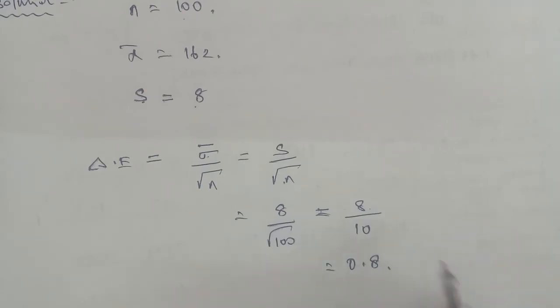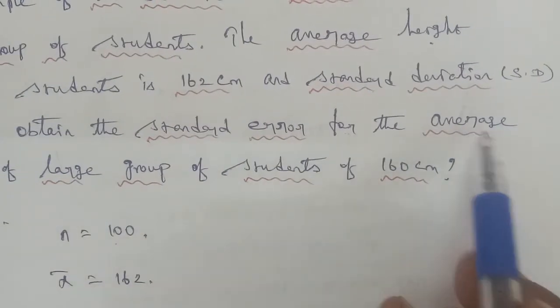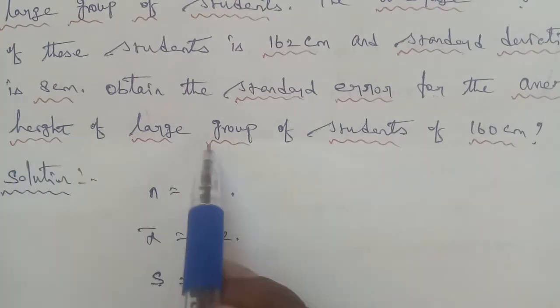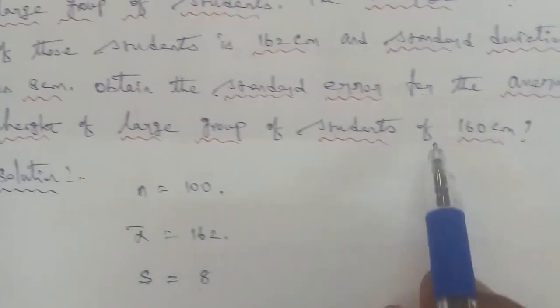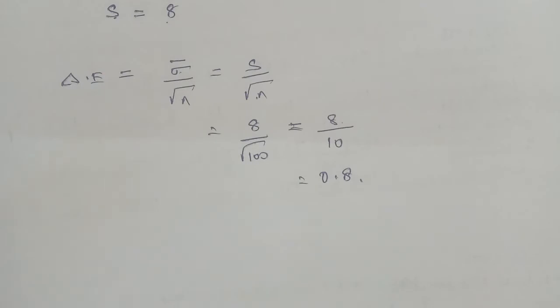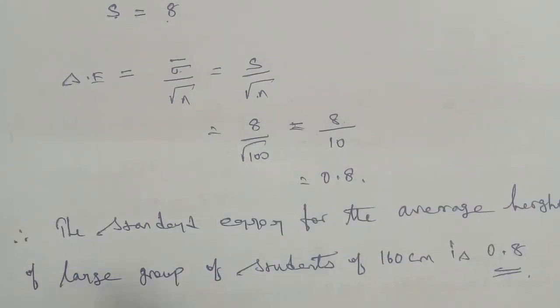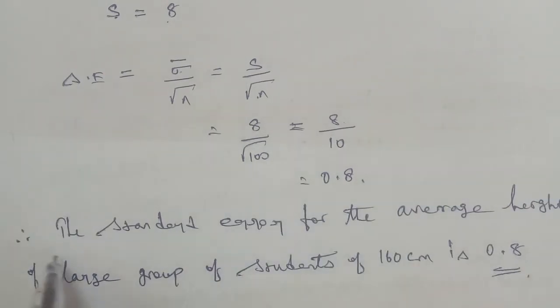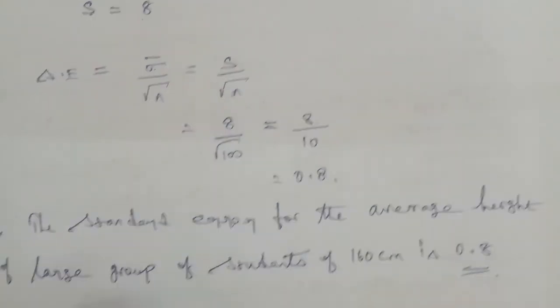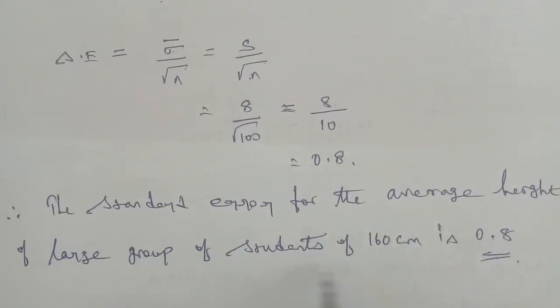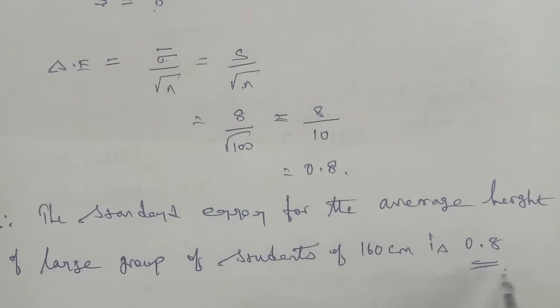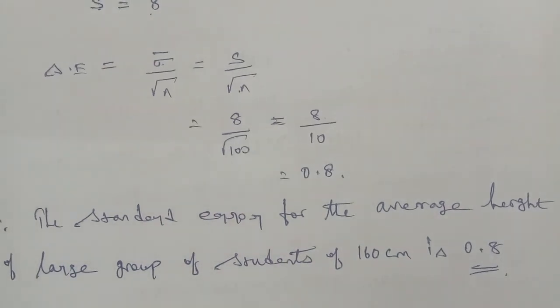So the standard error for the average height of the large group of students of 160 centimeter is 0.8. The standard error for the average height of the larger group of students 160 centimeter is 0.8. Thank you.